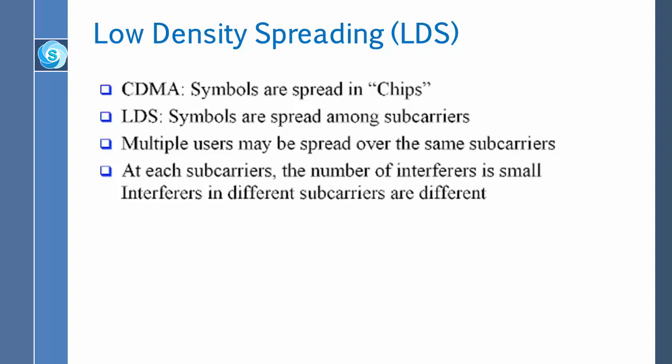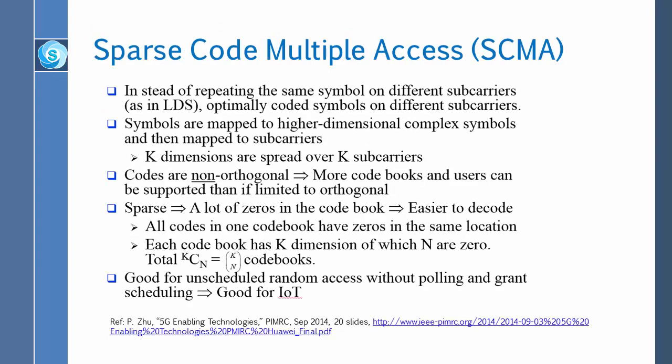Take that one step ahead and that is called Sparse Code Multiple Access, SCMA — again, a combination of CDMA and OFDMA. Symbols are mapped to higher-dimensional complex symbols and then mapped to subcarriers. This is slightly different from LDS. What they're doing in SCMA is taking the input and mapping it to higher-dimensional complex symbols. Complex is X plus iY, and higher dimensional.